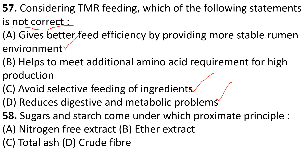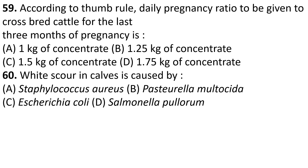Sugar and starch come under which proximate principle? The answer is Option A: Nitrogen Free Extract. According to thumb rule, the daily pregnancy ration to be given to crossbred cattle for the last 3 months of pregnancy is 1.75 kg of concentrate.